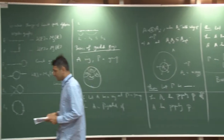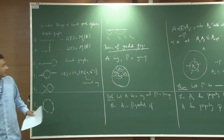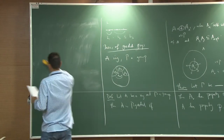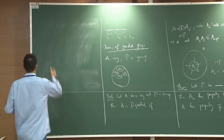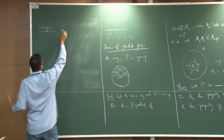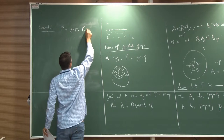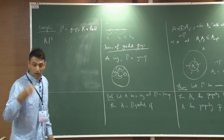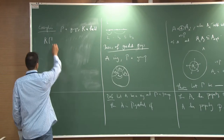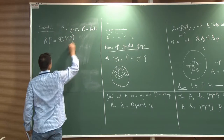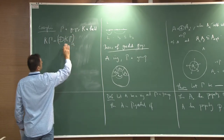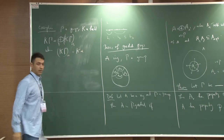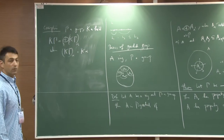Let me give some examples of graded rings. The go-to poster-boy example is group rings. Here Γ is a group and K is a field or a ring. Then the group ring KΓ is graded by Γ. The partitions are Kα = K·α, and when you multiply Kα and Kβ you have Kαβ. That's the Γ-graded ring.